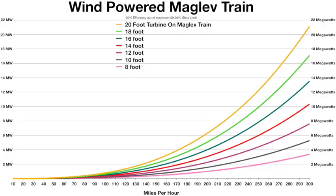The turbine on the front that is 18 feet in diameter can generate almost 20 megawatts of power and recharge the battery to make the maglev train perpetual at high speeds.